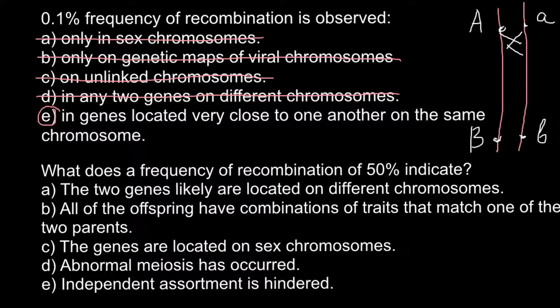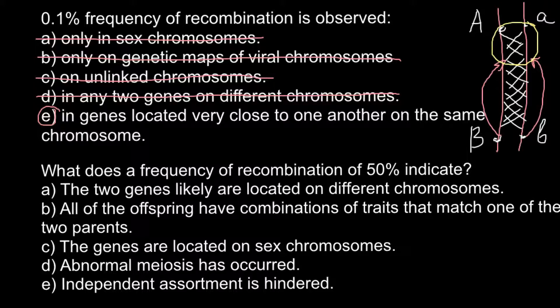As you see, recombination might happen in many places, and the greater the distance between two allelic pairs or two genes, the more chances that recombination might happen. If we move gene B closer, recombination frequency would be greatly reduced, because the greater the distance, the more chances for recombination or crossing over, and the smaller the distance, the fewer chances. So, on to the next question.